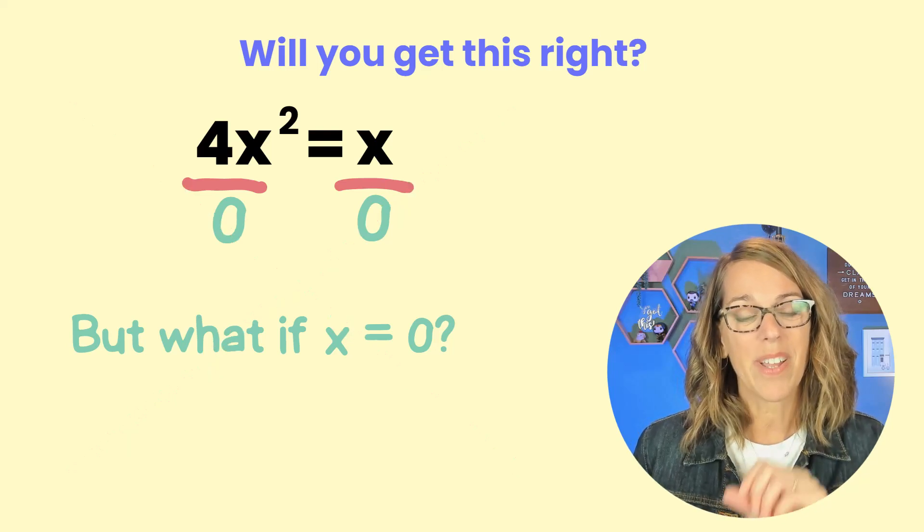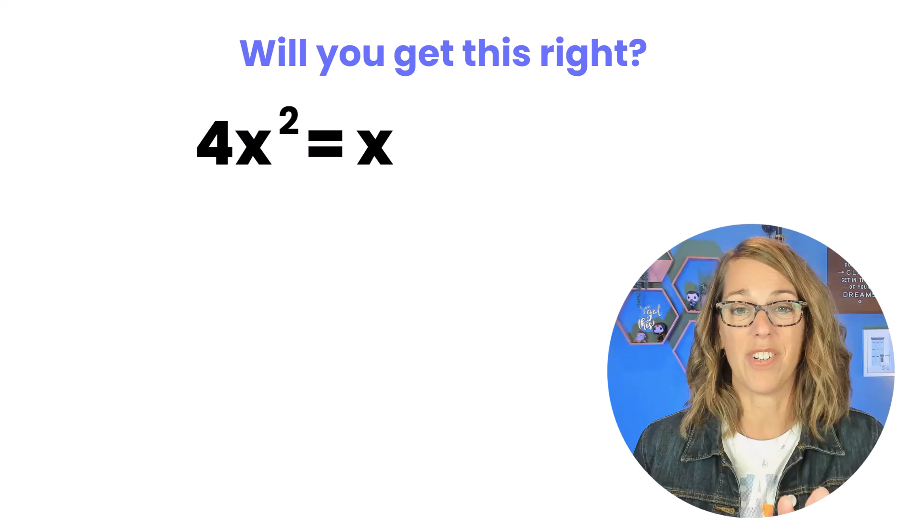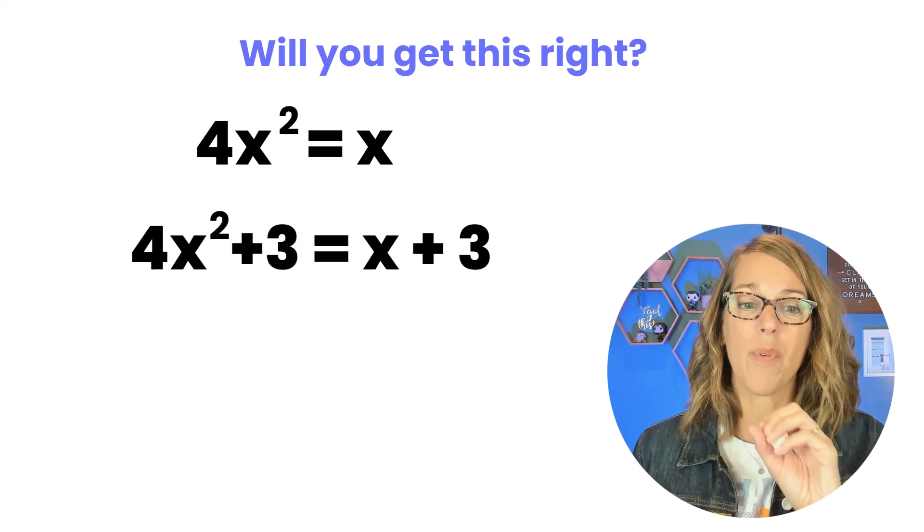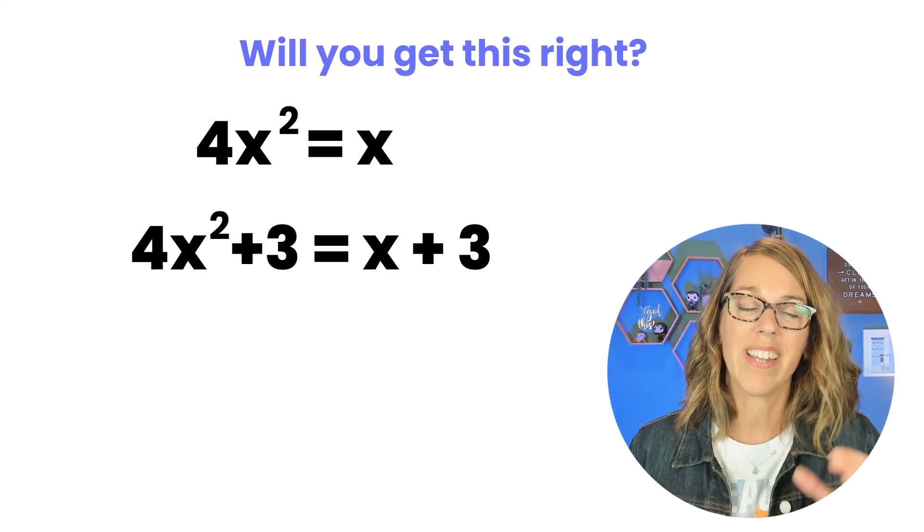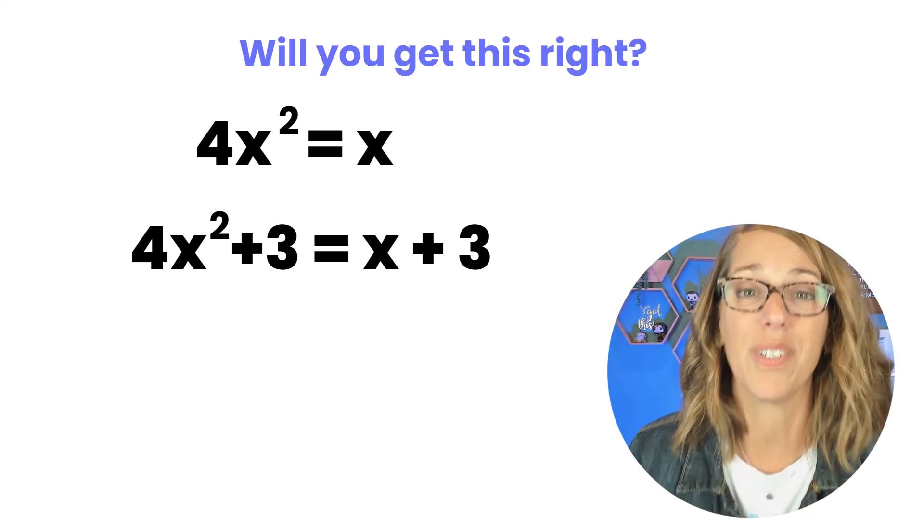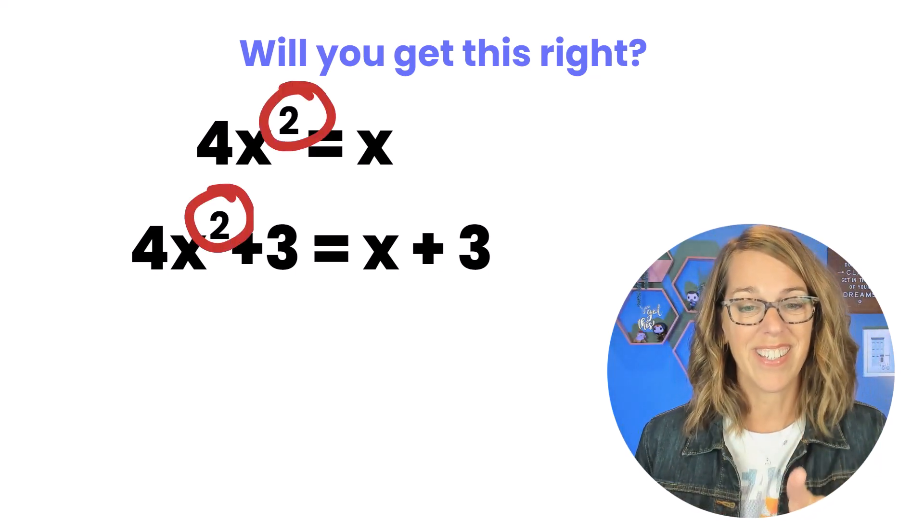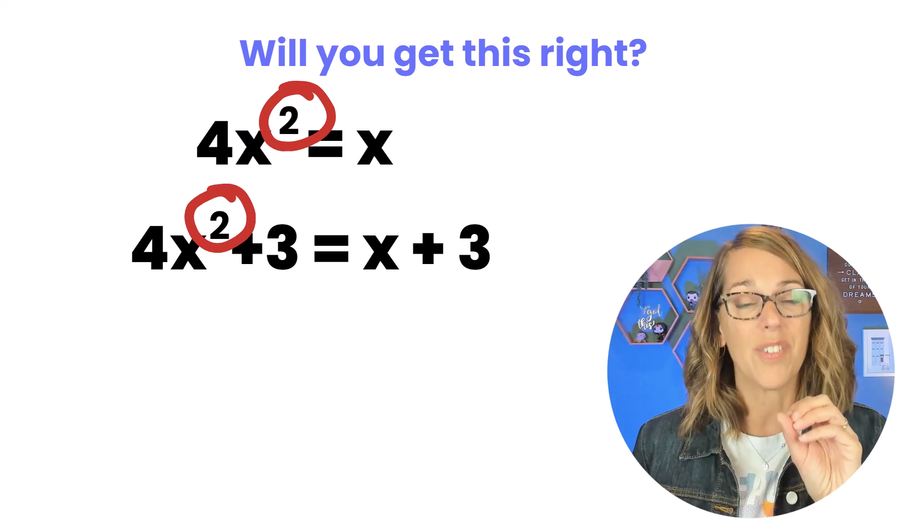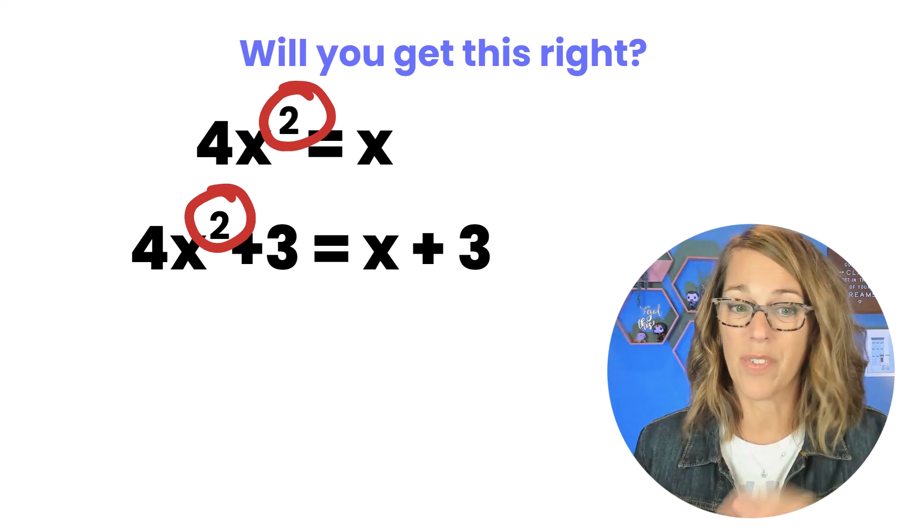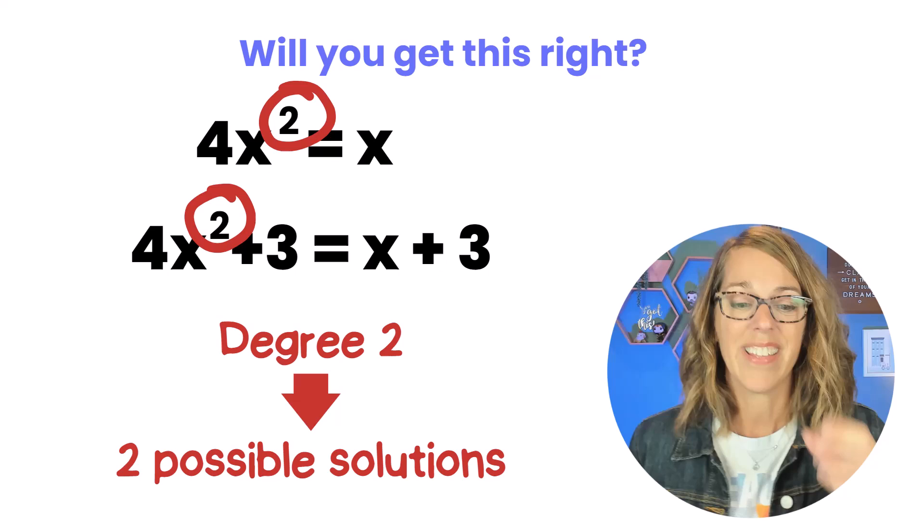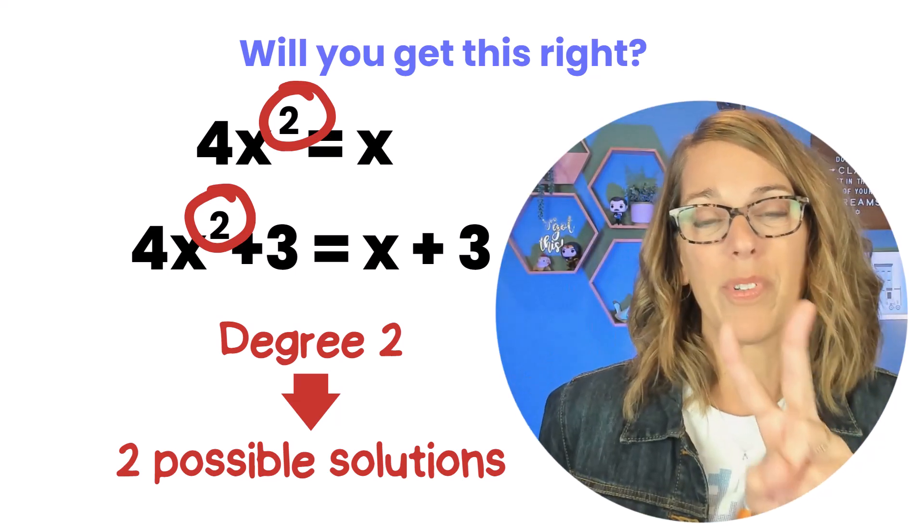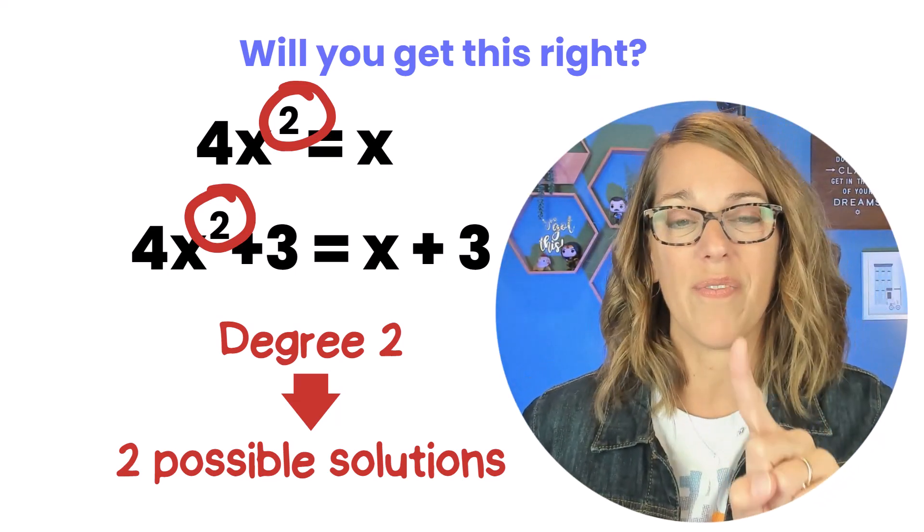So instead we're going to look at this degree 2 equation either in our simplified form or in our original form and here is such a wonderful clue that's going to help you get to the right answer. This is degree 2. When we've got a degree 2 equation, degree 2 meaning the highest degree, that means that we've got two possible solutions. We only found one.